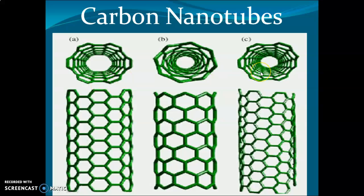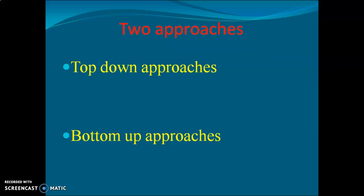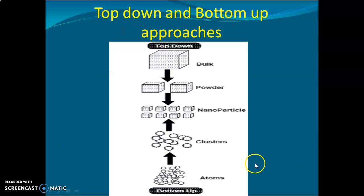Nanotechnology was pioneered by a scientist called Richard Feynman, who stated there is plenty of room at the bottom. From this came two approaches: the top-down approach and the bottom-up approach. Top-down means making things from bulk size material into a very small size material, while bottom-up means building from very small materials into a bulk size material.